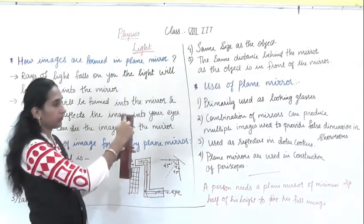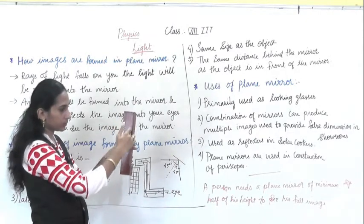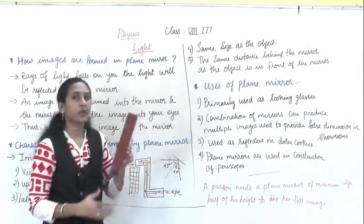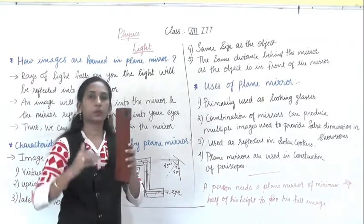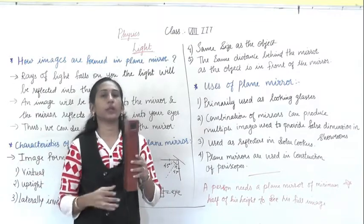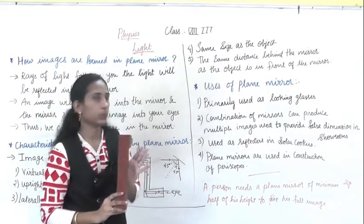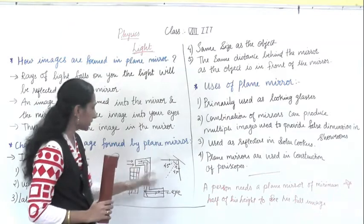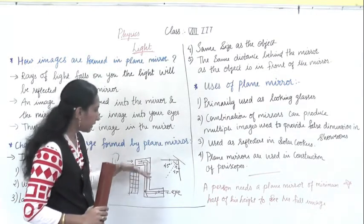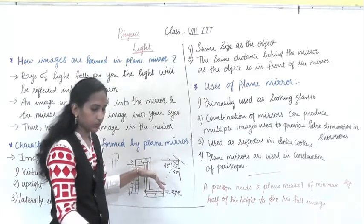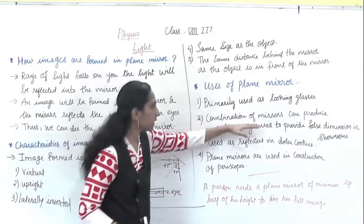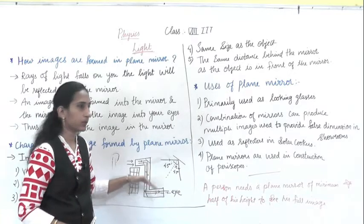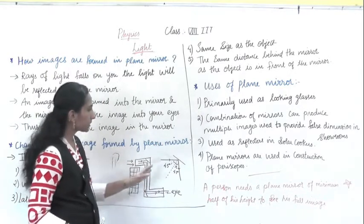In the periscope, light falls on the top mirror, reflects downward inside the tube, falls on the bottom mirror, and reflects back to our eyes. This instrument is used in submarines — if you are under water and want to see what is happening above water, such periscopes are fitted. It is also used in the military by soldiers. Two mirrors are used, and multiple images can also be seen.